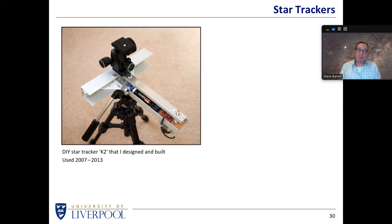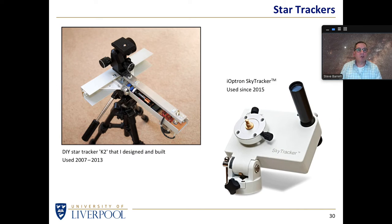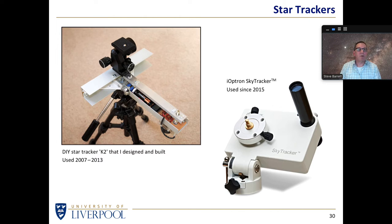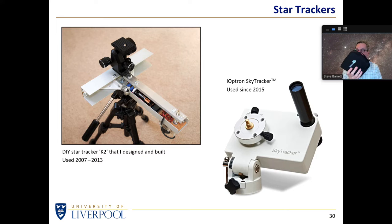I used that for many years to take pictures of the sky with my digital SLR camera, and then I moved over to a commercial device called an iOptron Sky Tracker. There are lots of companies making star trackers these days — 10 or 20 years ago there weren't many, but now there are plenty. The one I chose about 7 or 8 years ago was relatively small — it fits inside a small case, easy to throw into your luggage and take anywhere on holiday.